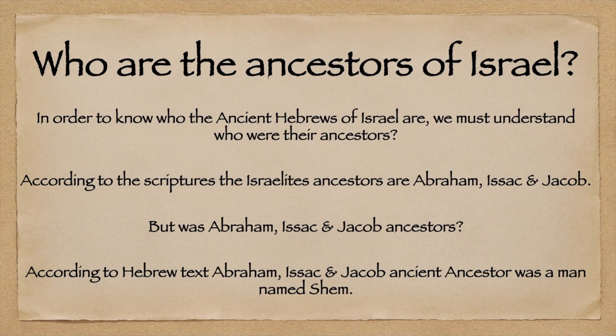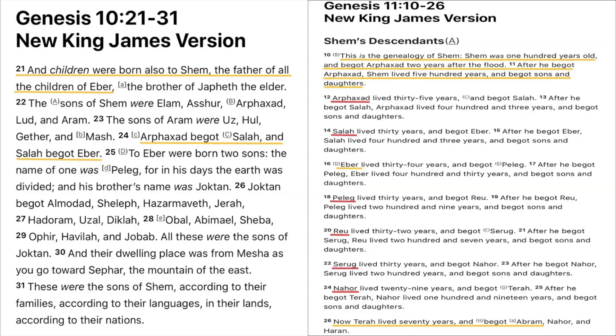In order to know who the ancient Hebrews of Israel are, we must understand who were their ancestors according to the scriptures. The Israelites were the descendants of Abraham, Isaac, and Jacob. But who were the ancestors of Abraham, Isaac, and Jacob? According to the Hebrew text, their ancient ancestor was a man named Shem.